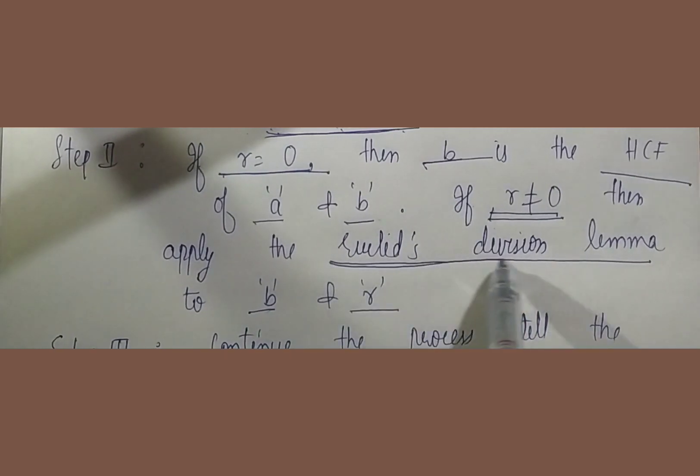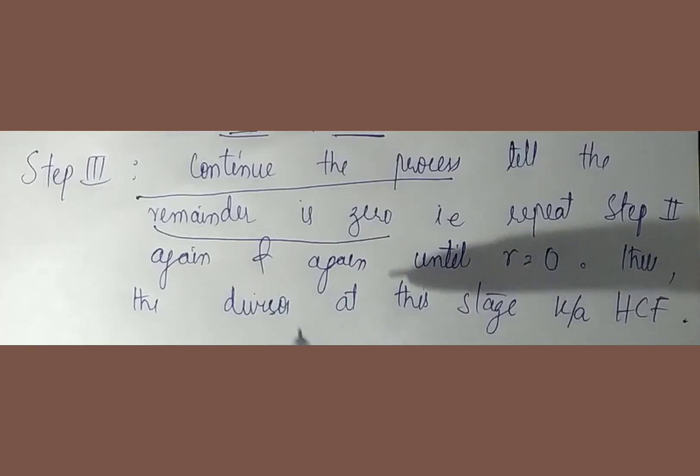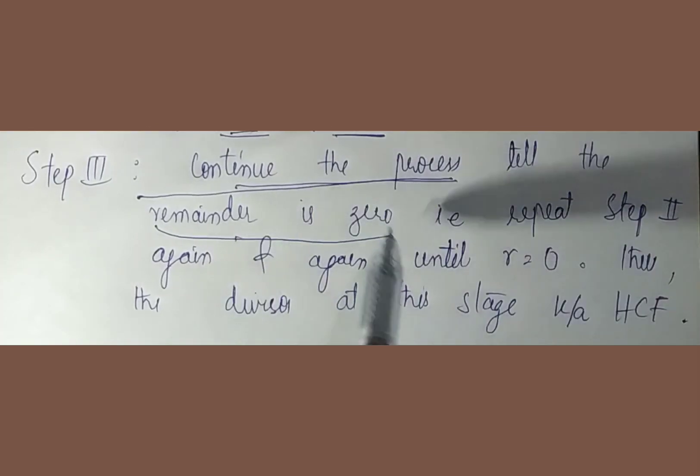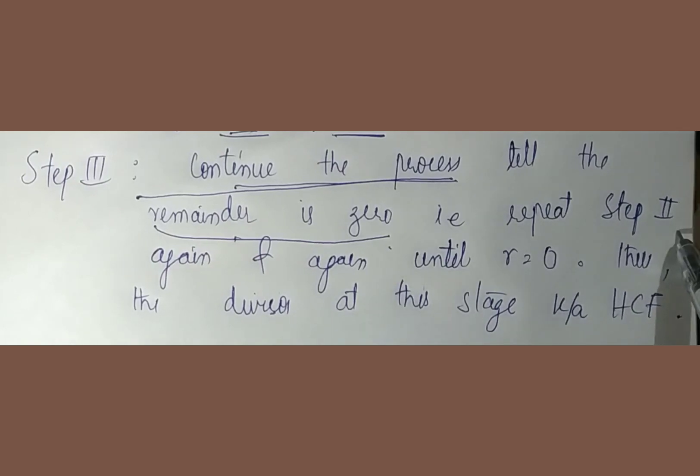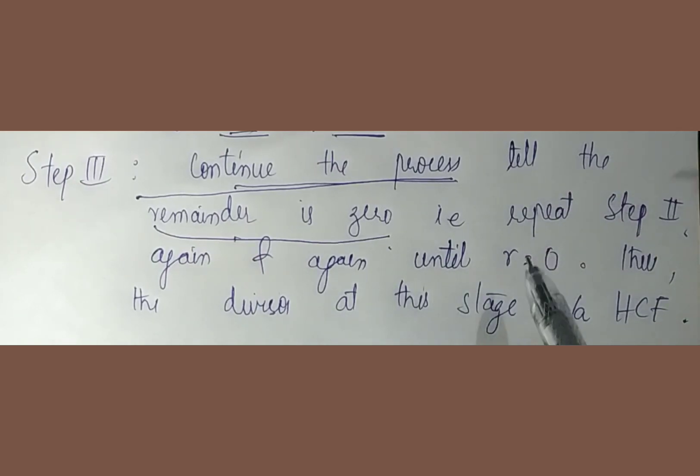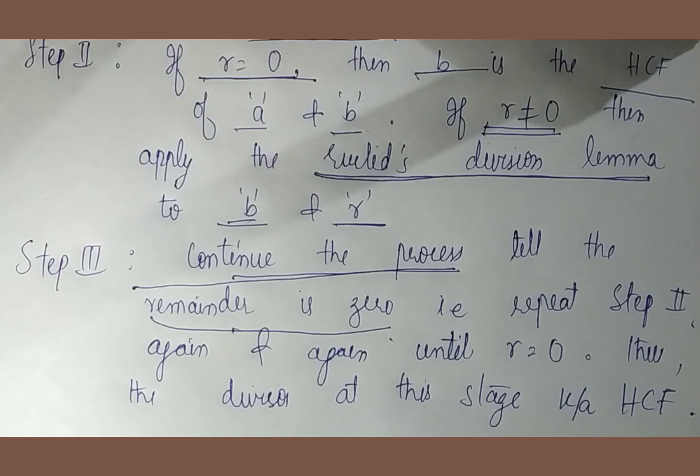In step third, continue the process till the remainder is 0 and repeat step second again and again until remainder equal to 0. Jab tak maara remainder 0 nahi ae ga, tak tak ham is process ko repeat karte jayenge. Jis step me humay remainder 0 mil jayega, usi ka divisor humara HCF ho ga.